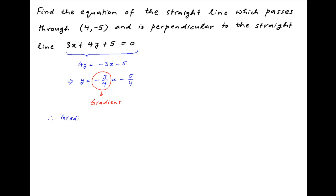Therefore, the gradient of the line which is perpendicular to this straight line is equal to minus 1 divided by minus 3 upon 4, which is equal to 4 upon 3.